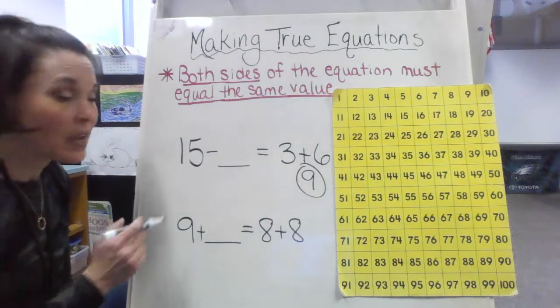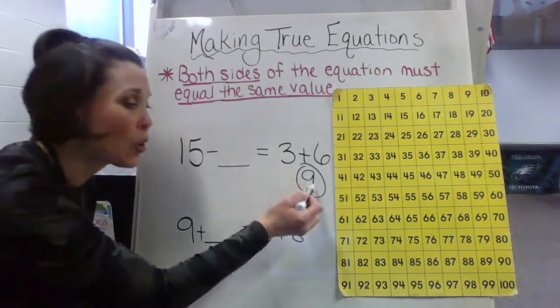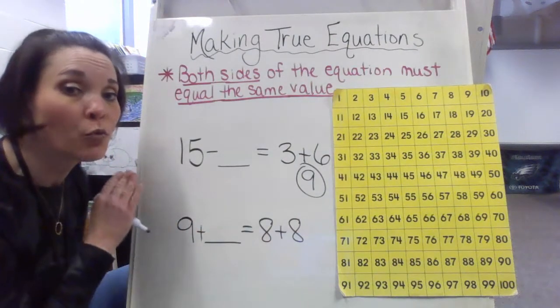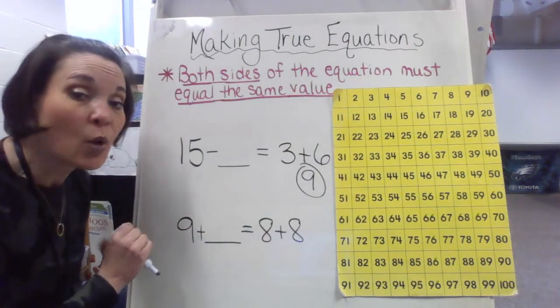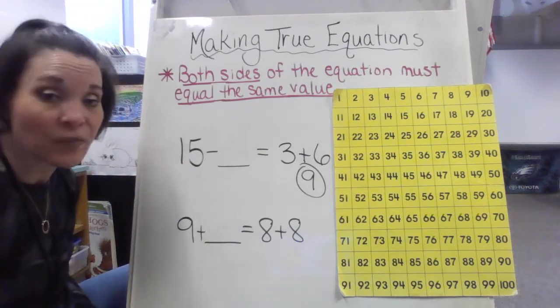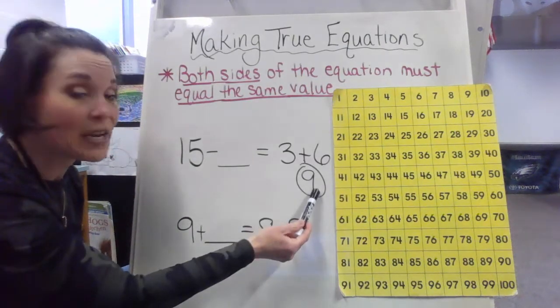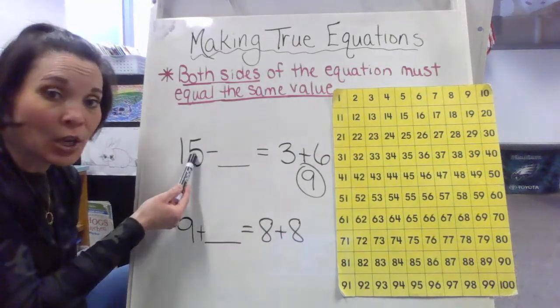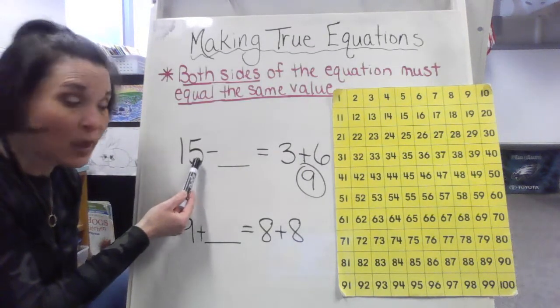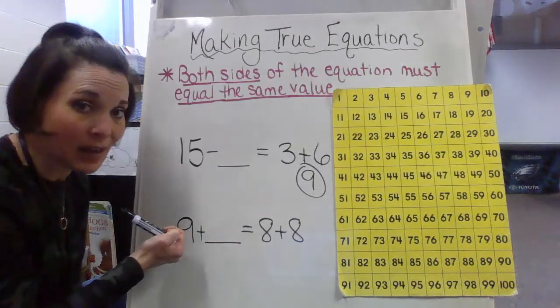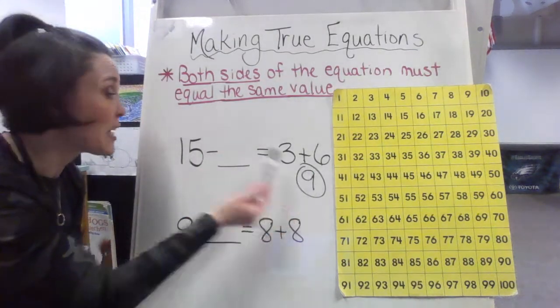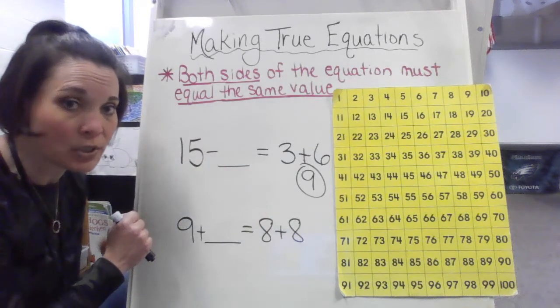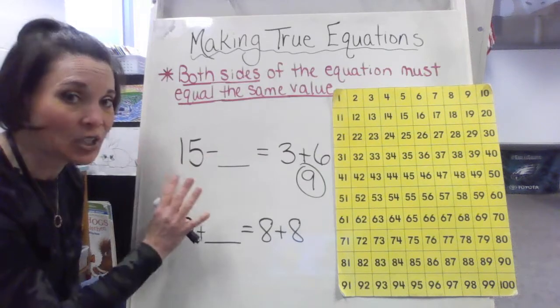So you have to ask yourself 15 take away what number is going to give me 9. If you know those basic facts, perfect. Move right ahead and use those. If you don't, we could use a counting on approach in order to help us figure that out. So what we could do is take the lower number, count on to my higher number. That's going to help me figure out what is missing. Even though we're looking at a plus here, a minus here, it doesn't matter. It is still going to work out. I'm looking mainly for the answer at the end.